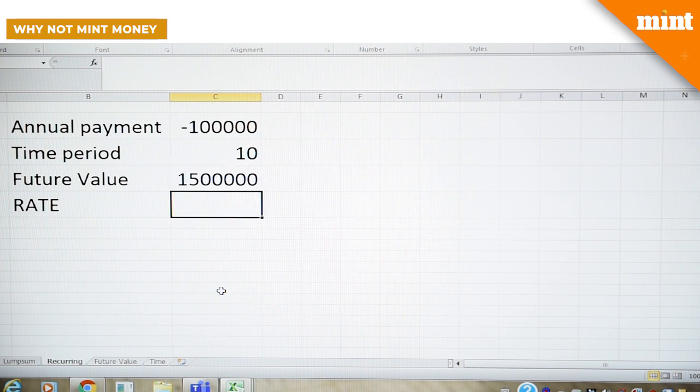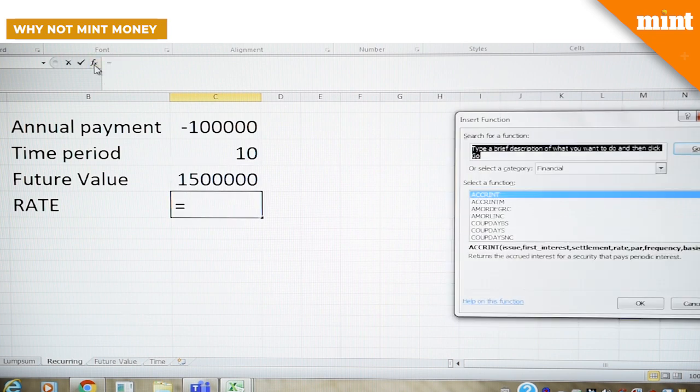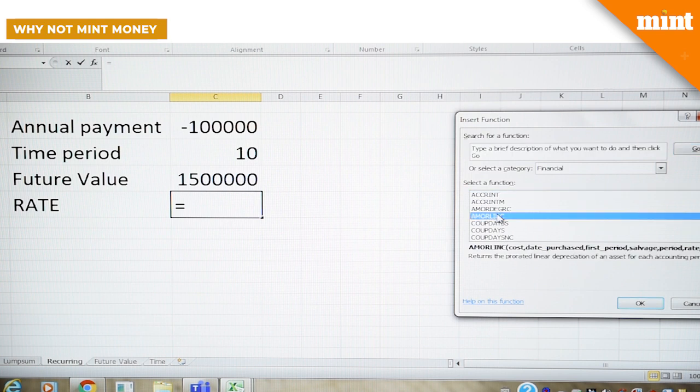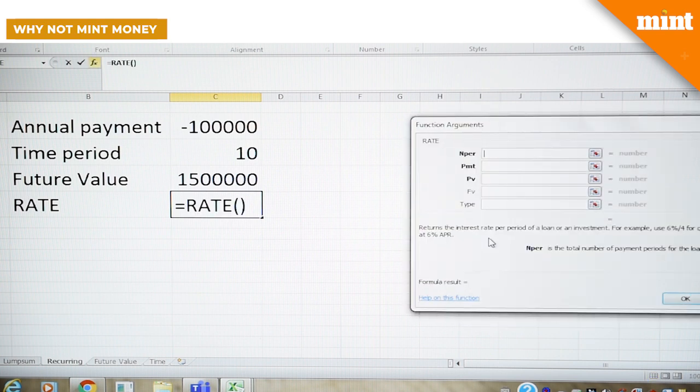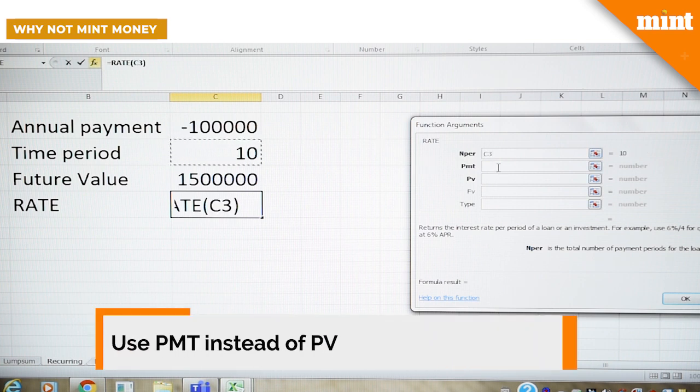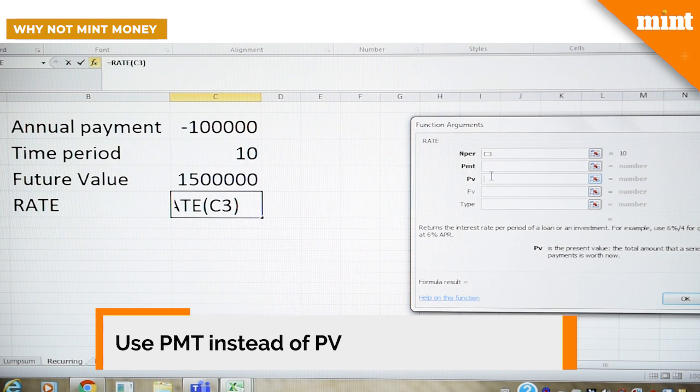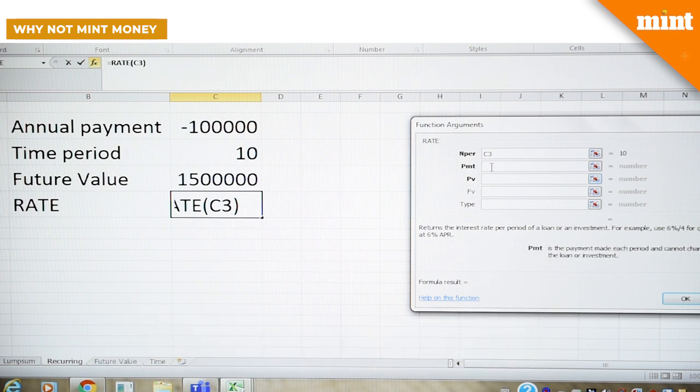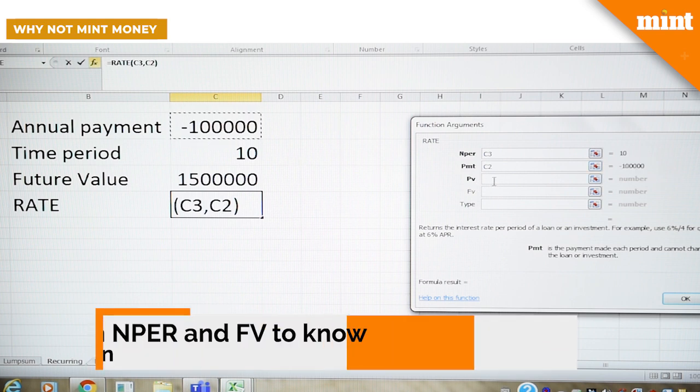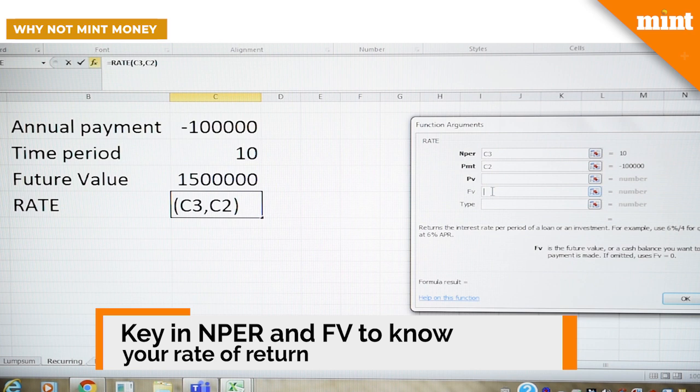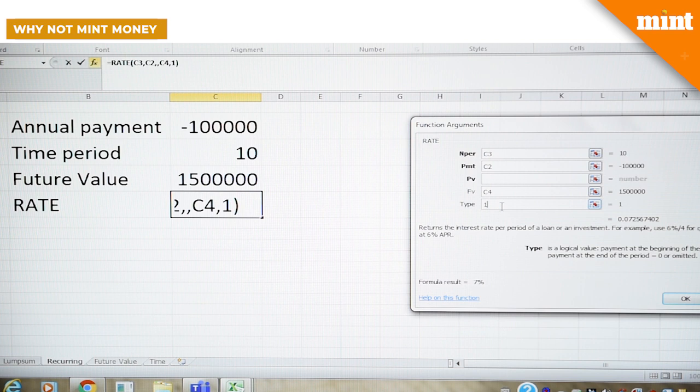We go back to the function again. We select RATE and we begin to key in the data. NPER is 10. Instead of PV, which is a present value which also indicates a lump sum, we go to PMT which is the periodic payment. We select this. Future value is 15 lakh. Type again, I'm pressing one to indicate investments made in the beginning.